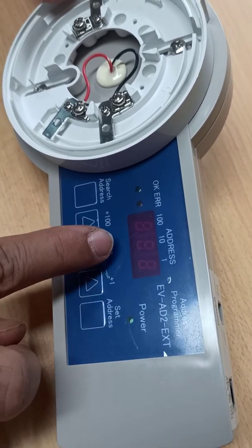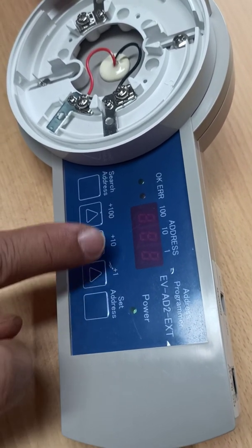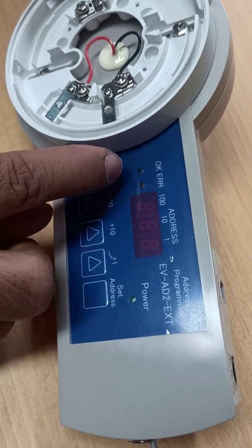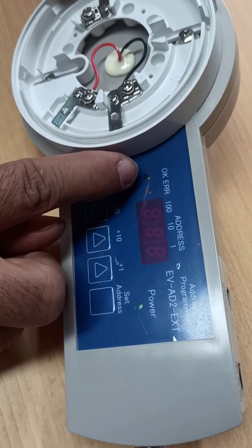Set address - when we press this the address will be set and this OK light, green light, will glow.